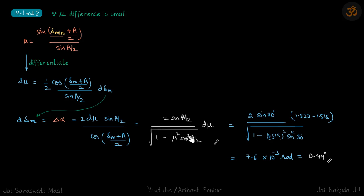So now we don't know what is cos of this, we'll convert into sine of delta M plus A by two. So that is root of one minus mu square. So what is this sine square delta M plus A by two? That is mu square into sine square A by two. That's what we have written root of one minus mu square sine square A by two.